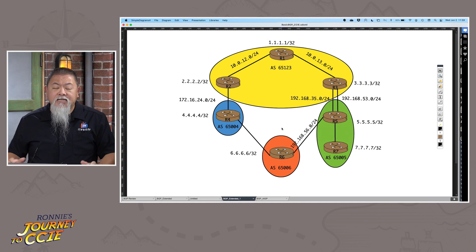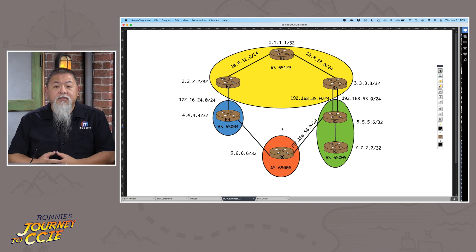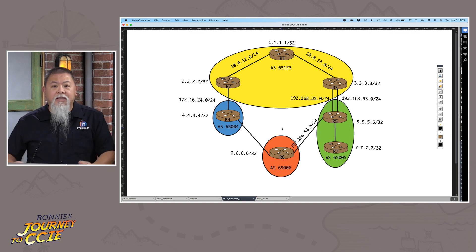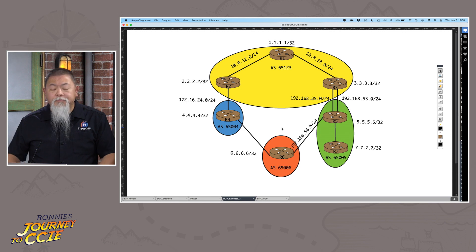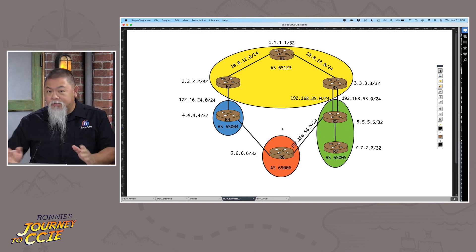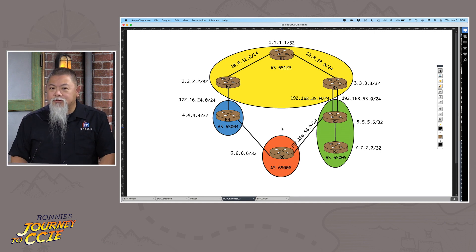Let's take a look at the diagram. When it comes to AS Path prepending, we're working with multiple autonomous systems. So if we take AS65123, and I'm choosing which path I want to influence to get access into my autonomous system, I can go from router 2 or router 3. Notice that what they're connected to is AS65004 or AS65005 — a perfect situation for using the AS Path and prepending.